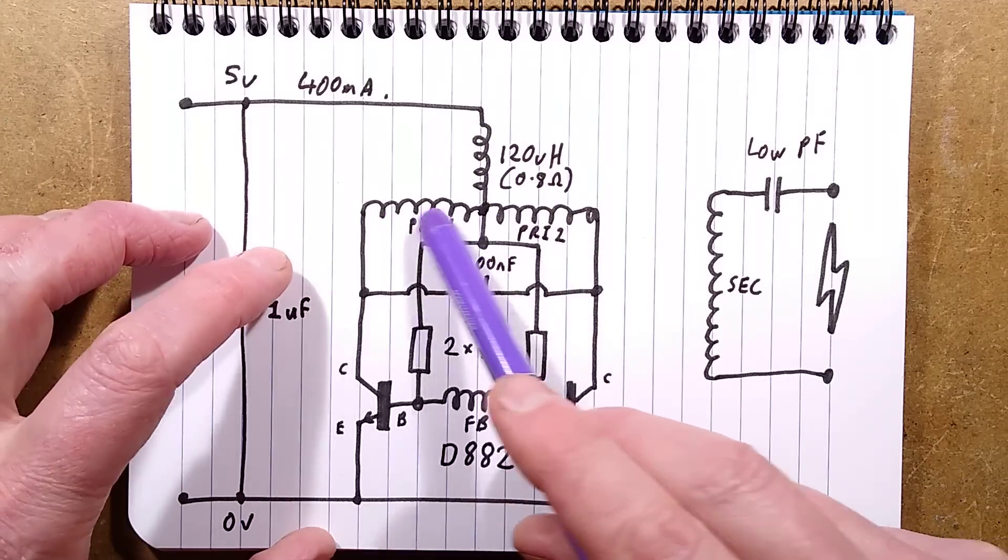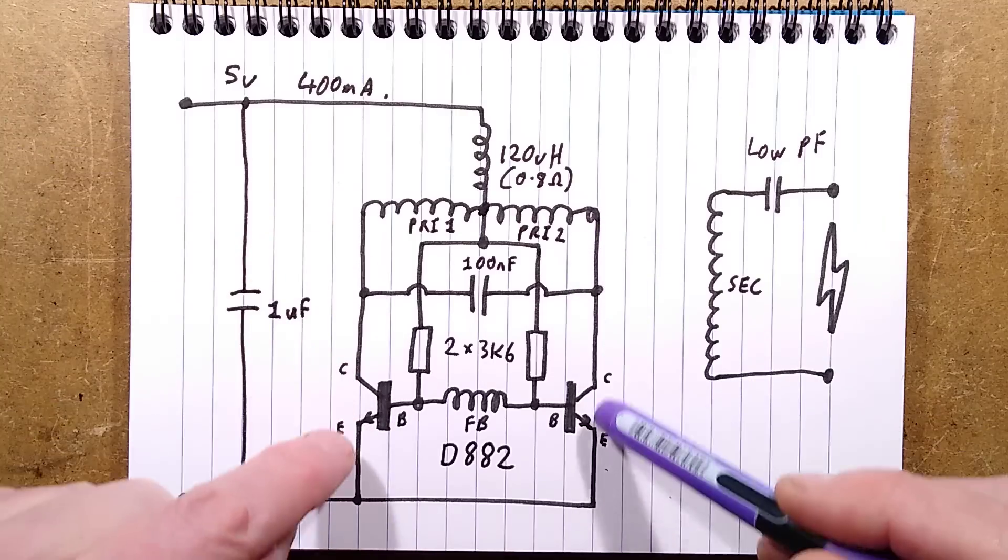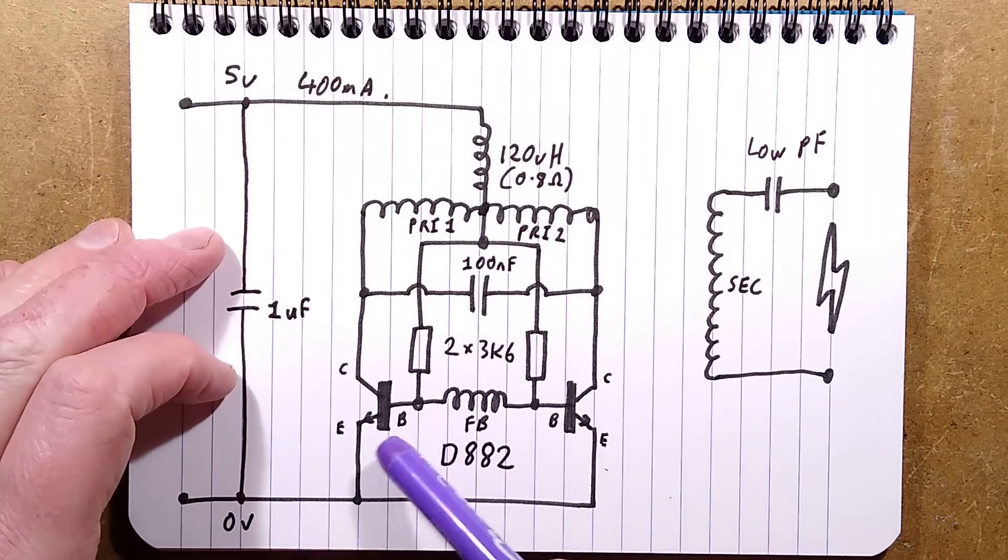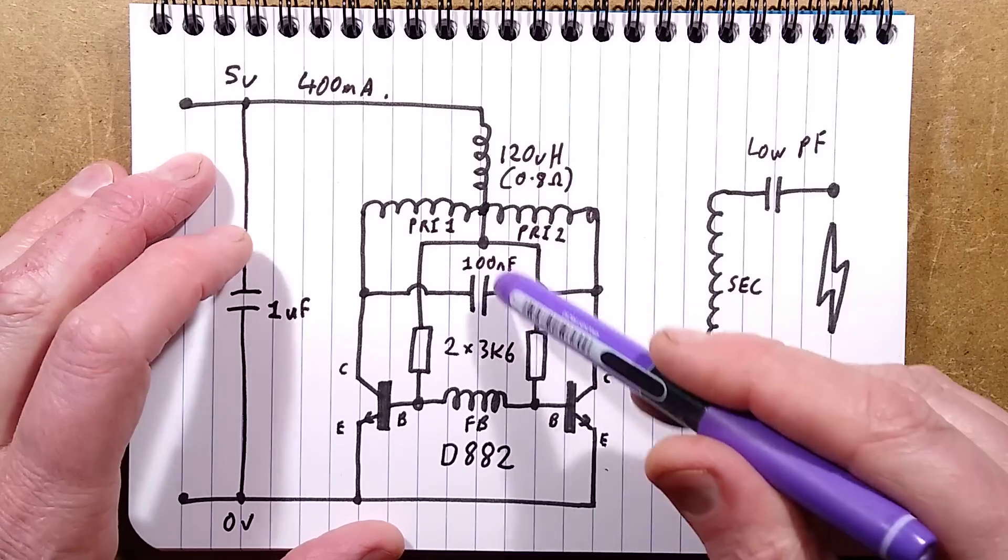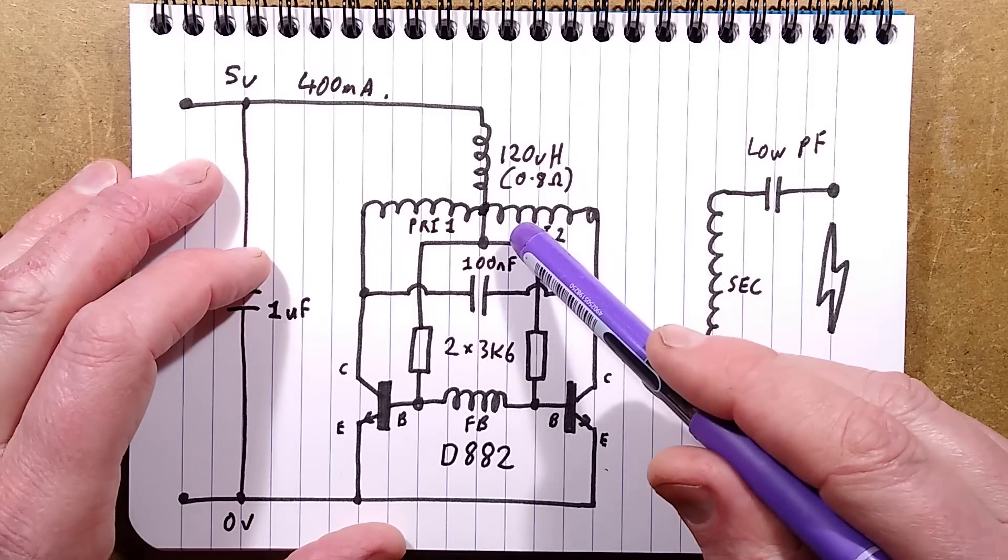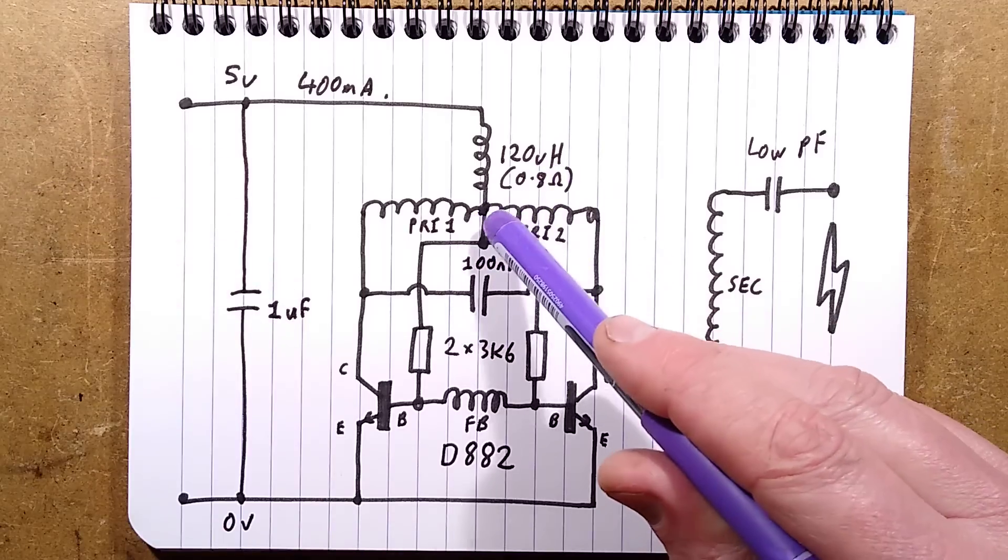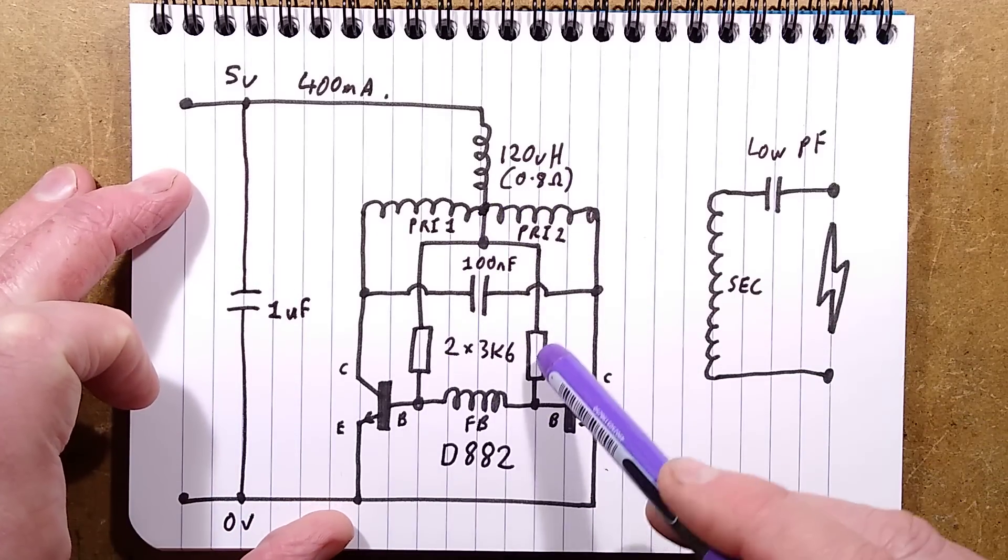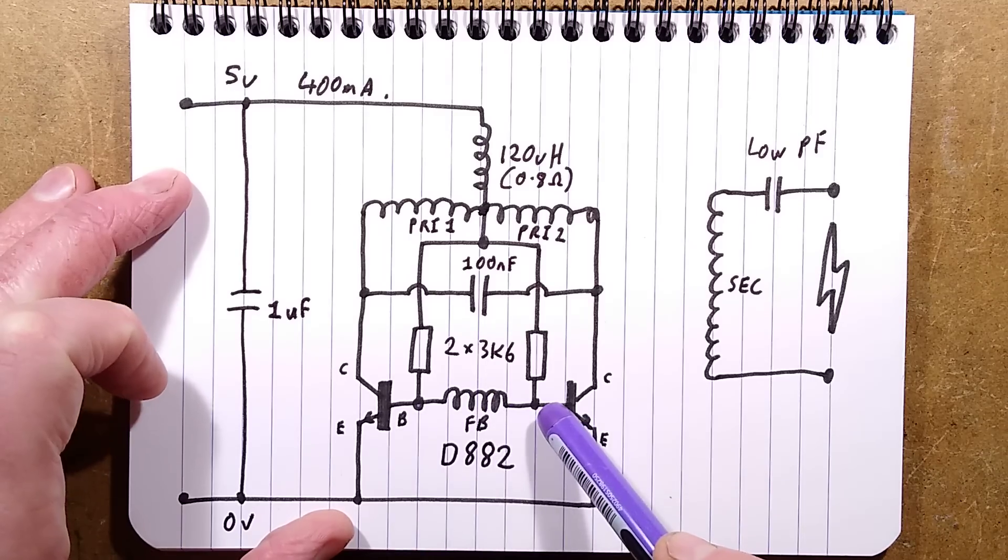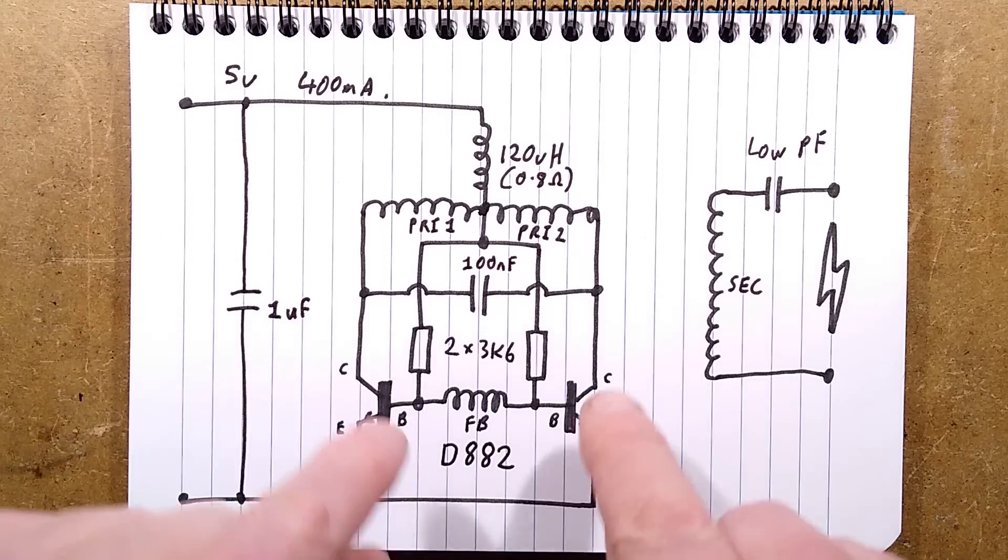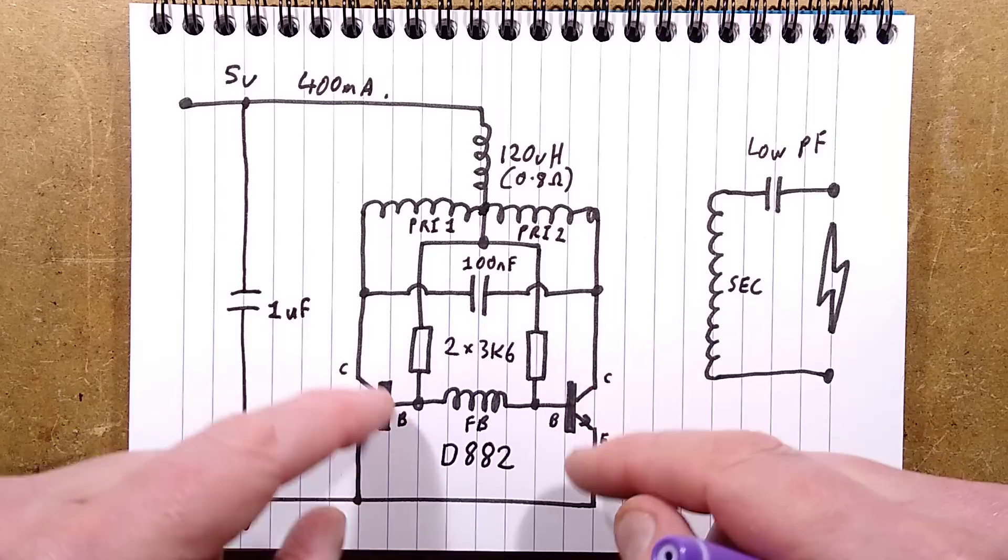The inductor feeds the centre of the primary winding and each side of the primary is switched down to the negative rail or the 0 volt rail by a standard NPN transistor D882. To bias it, there is a connection to the same point as the primary with two 3.6k ohm resistors going down to the base of each transistor, and then there is a feedback winding between the two that alternately pushes and pulls. Whichever one starts up first, it's a sort of avalanche effect, it will just start oscillating backwards and forwards.